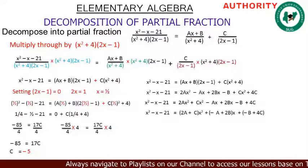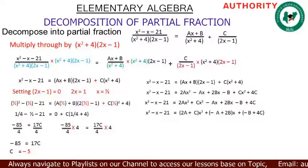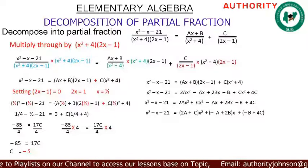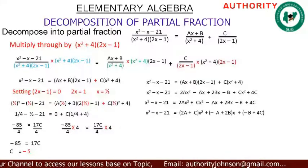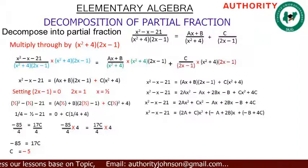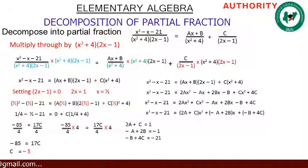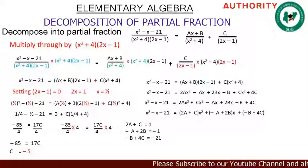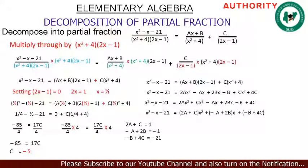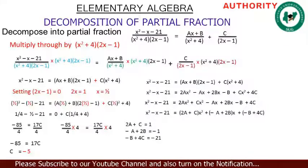Comparing coefficients on both sides: the coefficient of x squared on the left is 1, giving 2a plus c equals 1. The coefficient of x on the left is minus 1, giving minus a plus 2b equals minus 1. The constant term on the left is minus 21, giving minus b plus 4c equals minus 21.